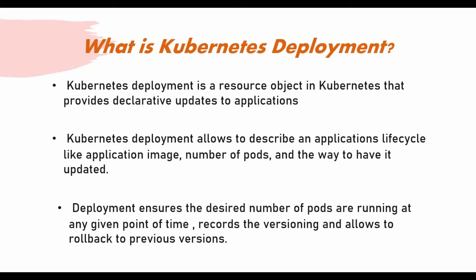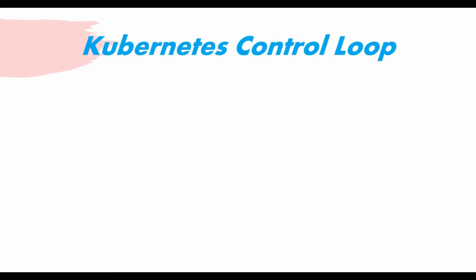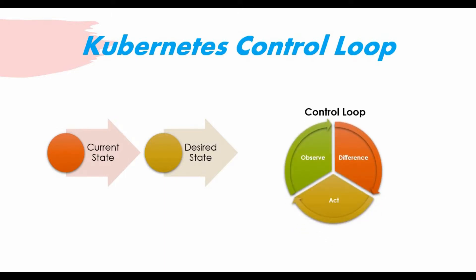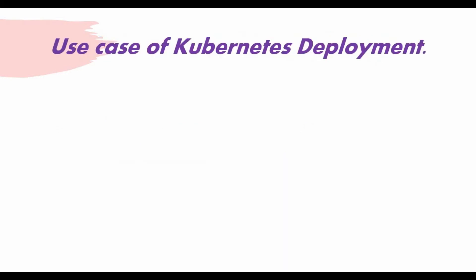Let's quickly talk about the Kubernetes control loop. In Kubernetes, we have a current state and a desired state. The current state is what is currently running in your cluster. In our replica set or deployment manifest file, we define the desired state. The control loop observes the current Kubernetes state, checks the difference between current and desired state, and takes action to bring the cluster to the desired state.